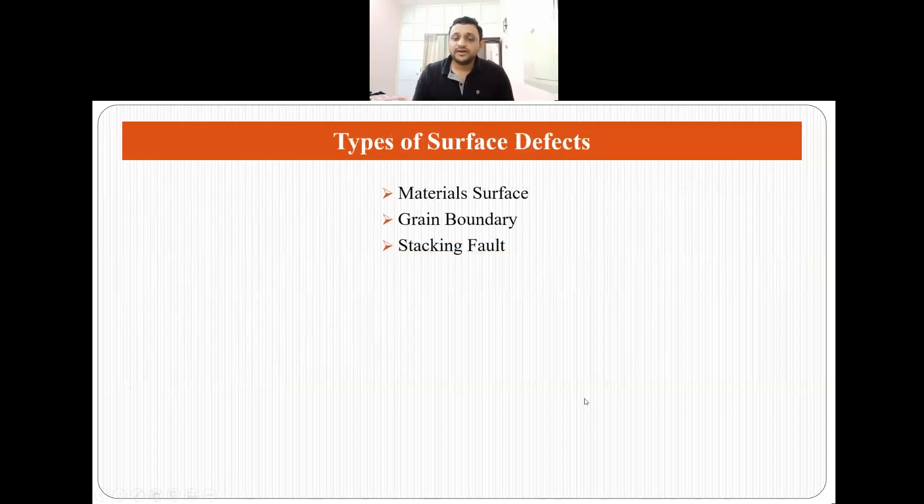Now what are different types of surface defects? Mainly we talk about three types of surface defects: material surface, grain boundary (which includes high angle grain boundary and low angle grain boundary), and the third one is stacking fault.